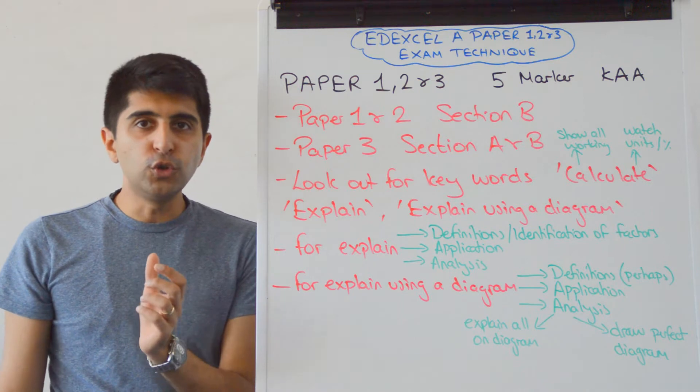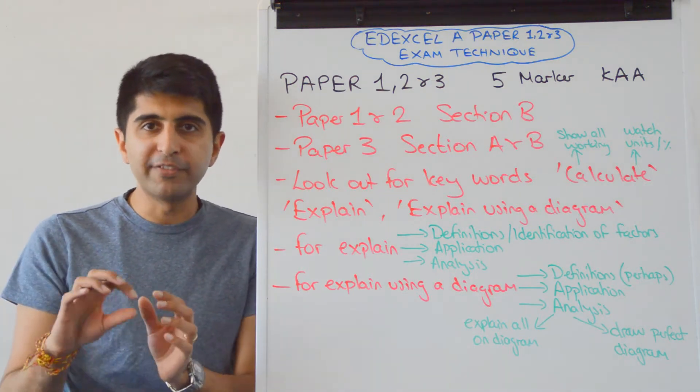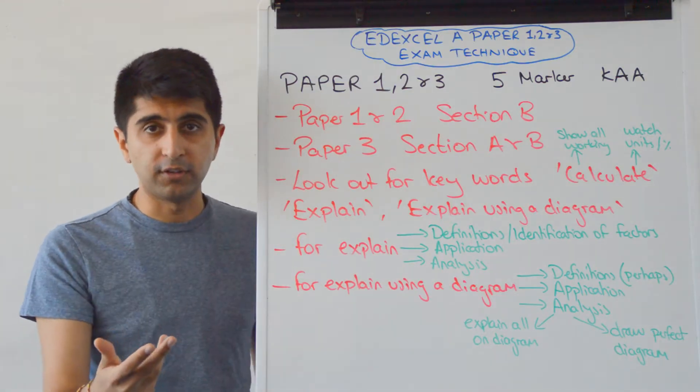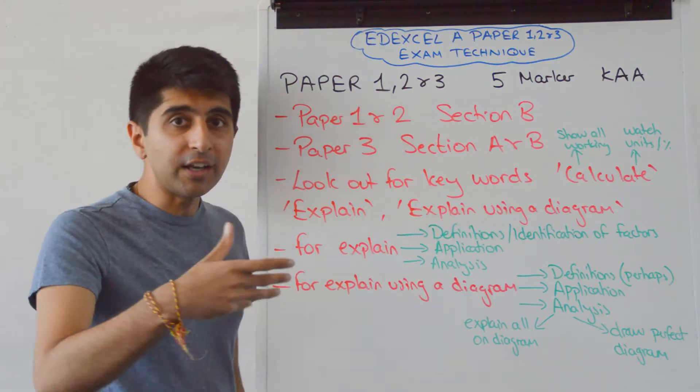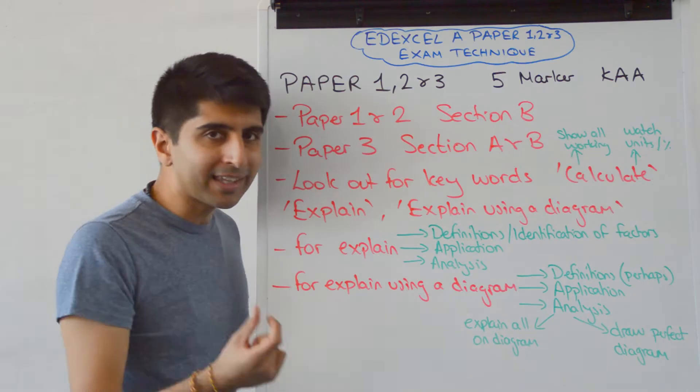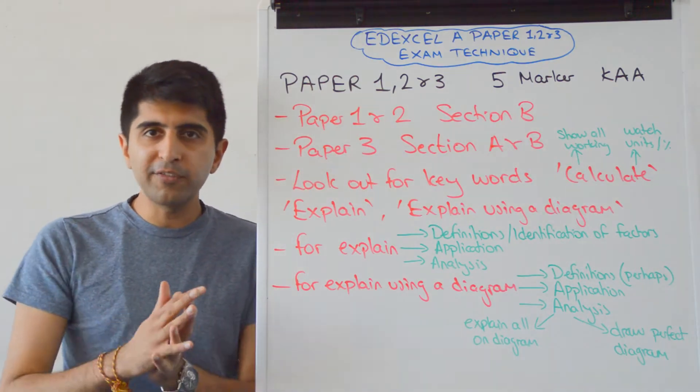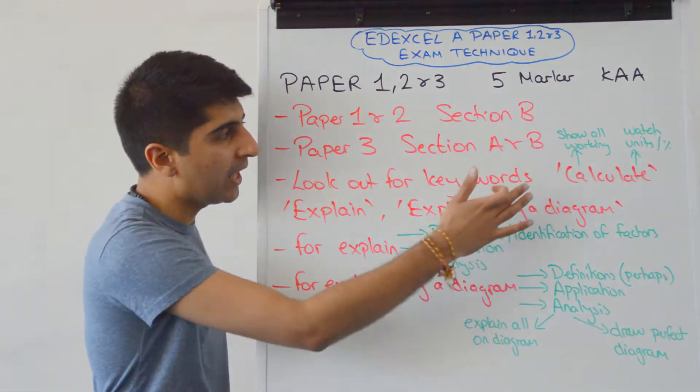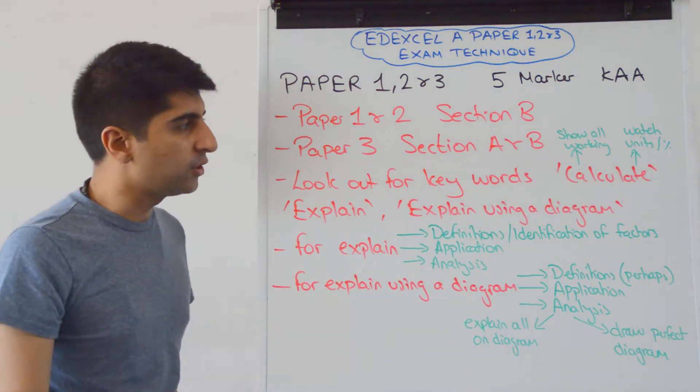Now you need to look out for what you need to do in this five-marker. It can come in a variety of different styles. It could be an explain question. It could be an explain using a diagram question. It could be a calculate question. It could come in a variety of ways, but remember, it will never need any evaluation, so it can only ever be really these kind of questions.